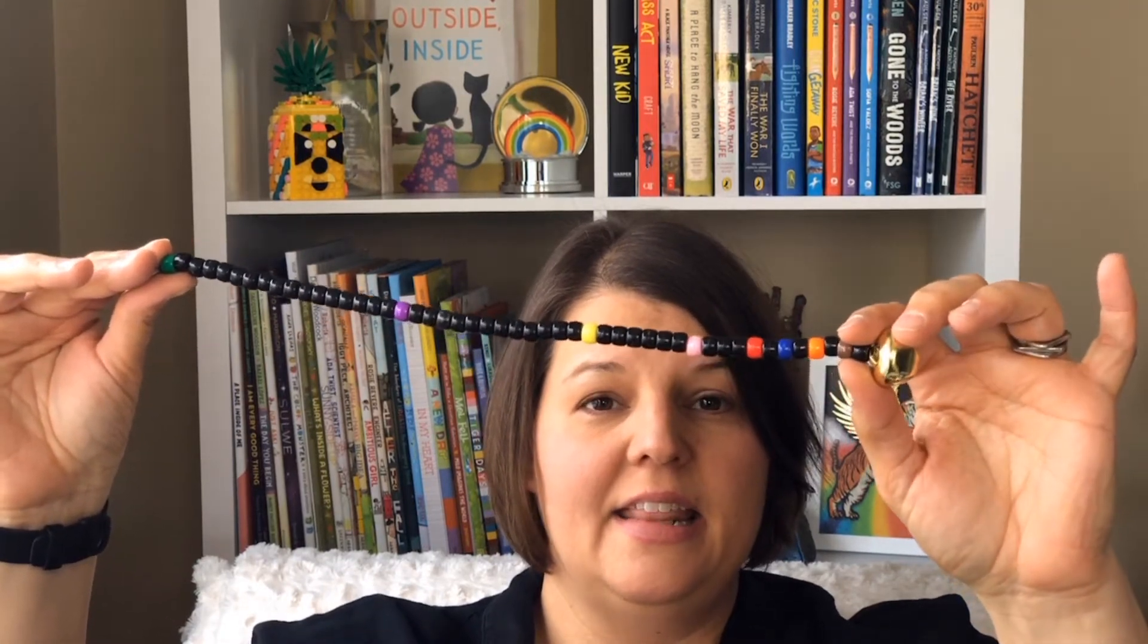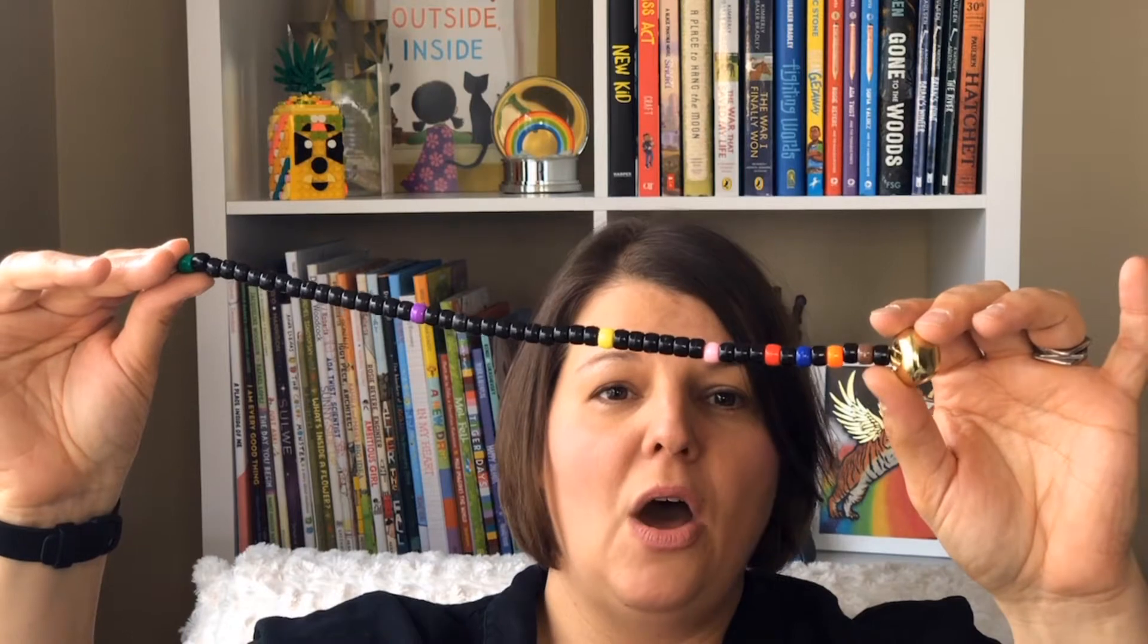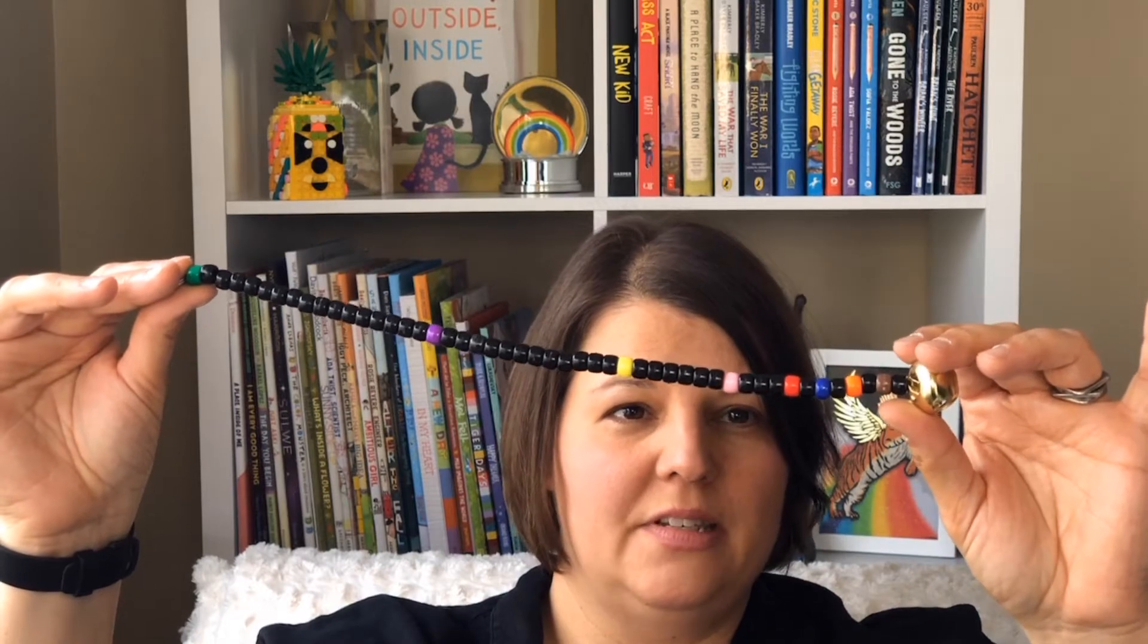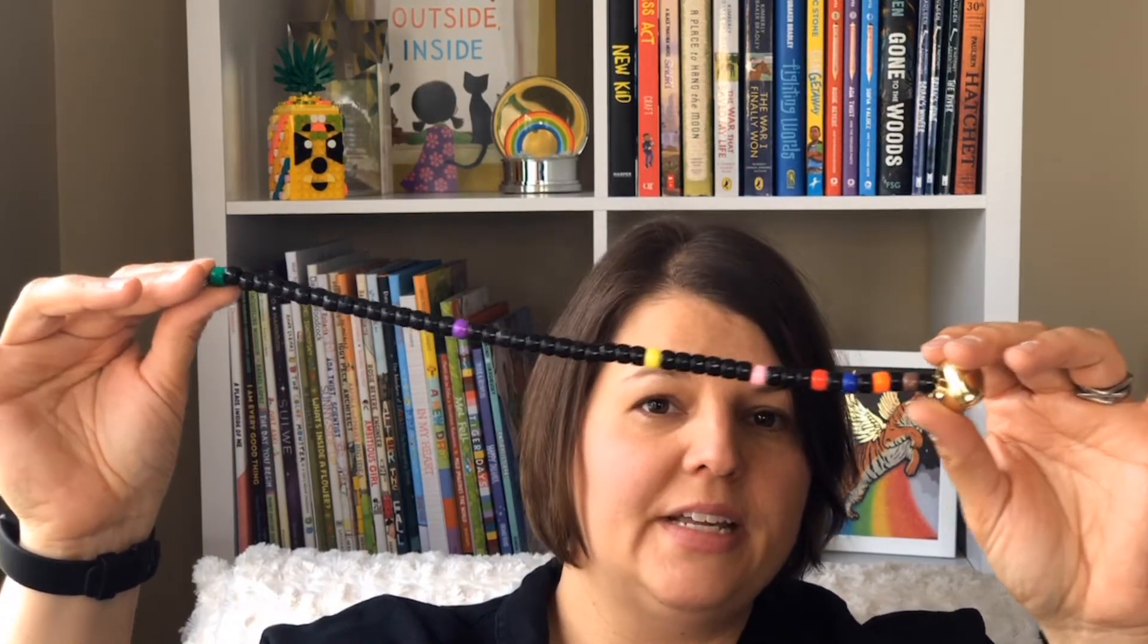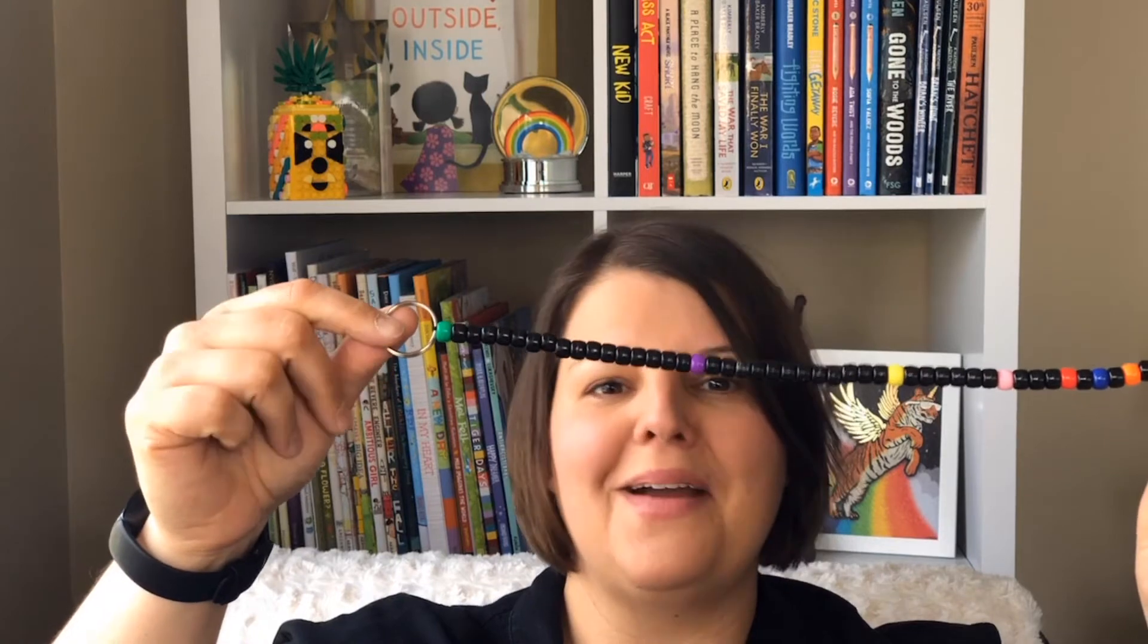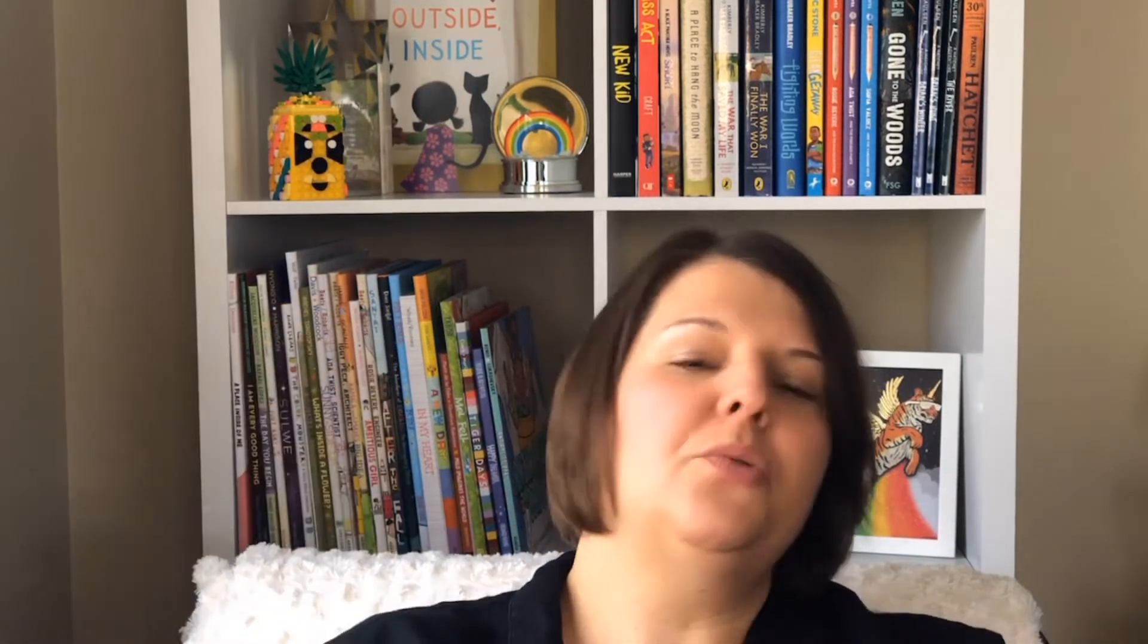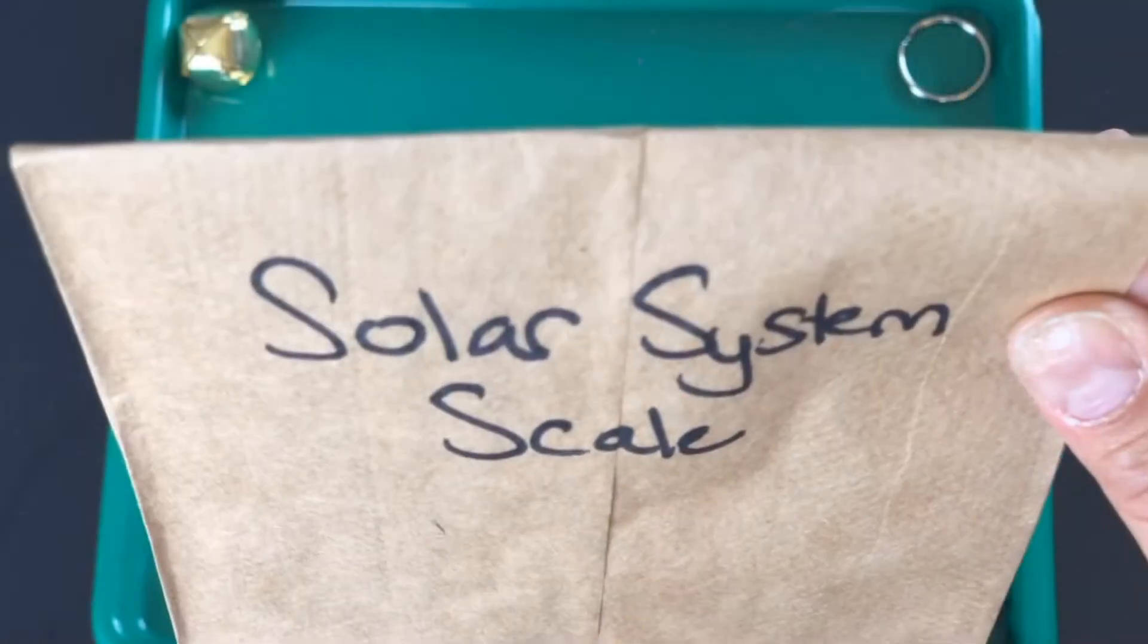The different colored beads are the different planets. You can see Earth is right there. At the beginning of the solar system the planets are closer together, but then when you get to the end they're very very far apart. The measurement between the planets is called astronomical units. Let's get started.